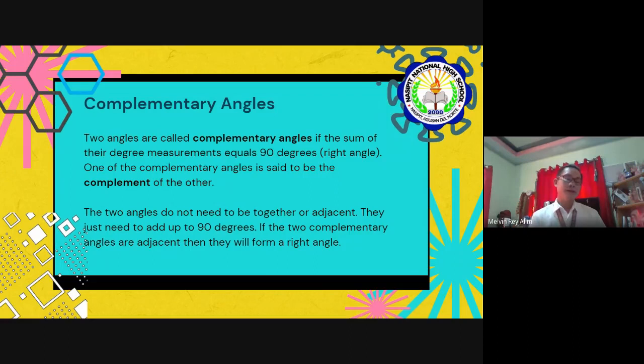Remember, that the two angles do not need to be together or adjacent. They just need to add up to 90 degrees. If the two complementary angles are adjacent then they will form a right angle.